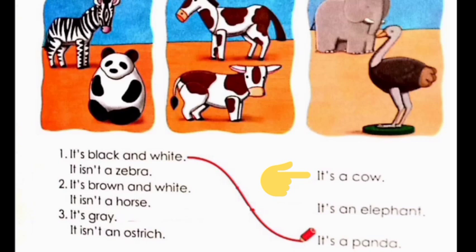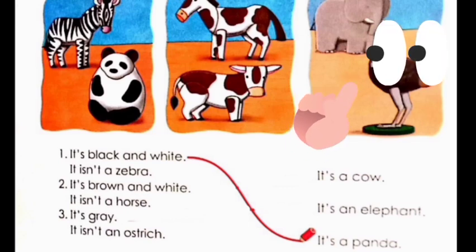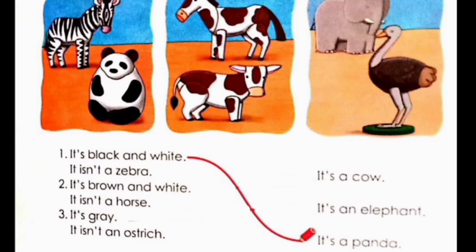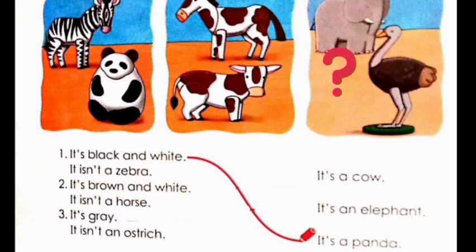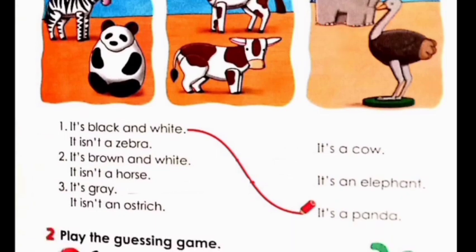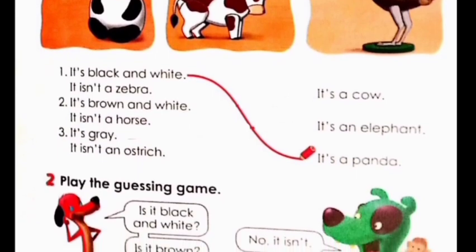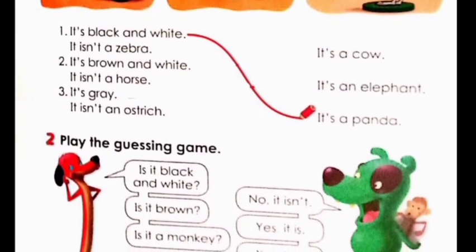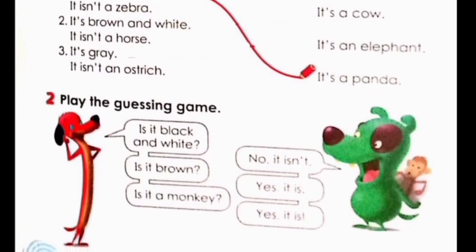Number three: it's gray, it isn't an ostrich. We take a look at picture number three — we have an elephant and an ostrich. The sentence says it's gray, it isn't an ostrich, so what animal is it? Can you guess? Now we move to exercise number two: the guessing game. You can do it with your parents, brothers, or sisters.